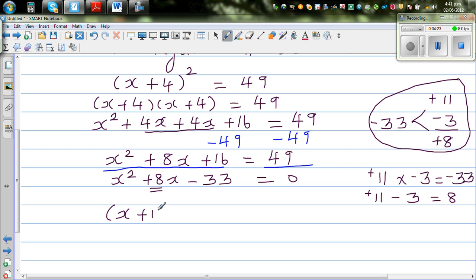So you factorize like this. This is x plus 11 times x minus 3 is equal to 0. Now to check your answer, you can expand this. You should get this.